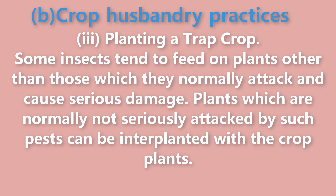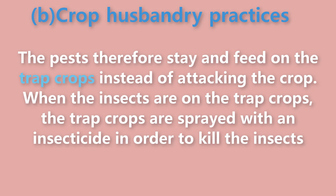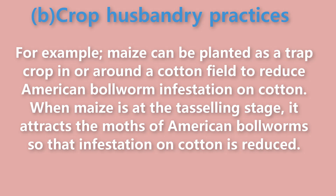Planting a trap crop: Some insects tend to feed on plants other than those which they normally attack and cause serious damage. Plants which are normally not seriously attacked by such pests can be interplanted with the crop plants. Alternatively, such plants may be grown on the boundaries of the field. If this is done, the pests tend to be attracted by such crops so that they do not attack the field crop. For this reason, they are called trap crops. When the insects are on the trap crops, the trap crops are sprayed with an insecticide in order to kill the insects.